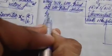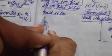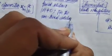This video is about the trivial and non-trivial solution. For the trivial solution, the determinant of any square matrix is not equal to 0. For the non-trivial solution, the determinant of any square matrix A is equal to 0.